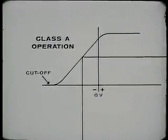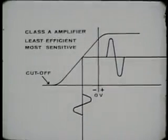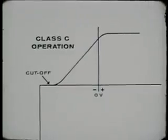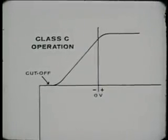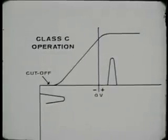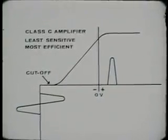In a class A amplifier, the plate current flows during the entire input cycle. This makes the class A amplifier the least efficient, yet the most sensitive. In a class C amplifier, plate current flows only during a portion of the positive half of the input signal and is cut off at all other times. The class C amplifier is the least sensitive, but the most efficient.